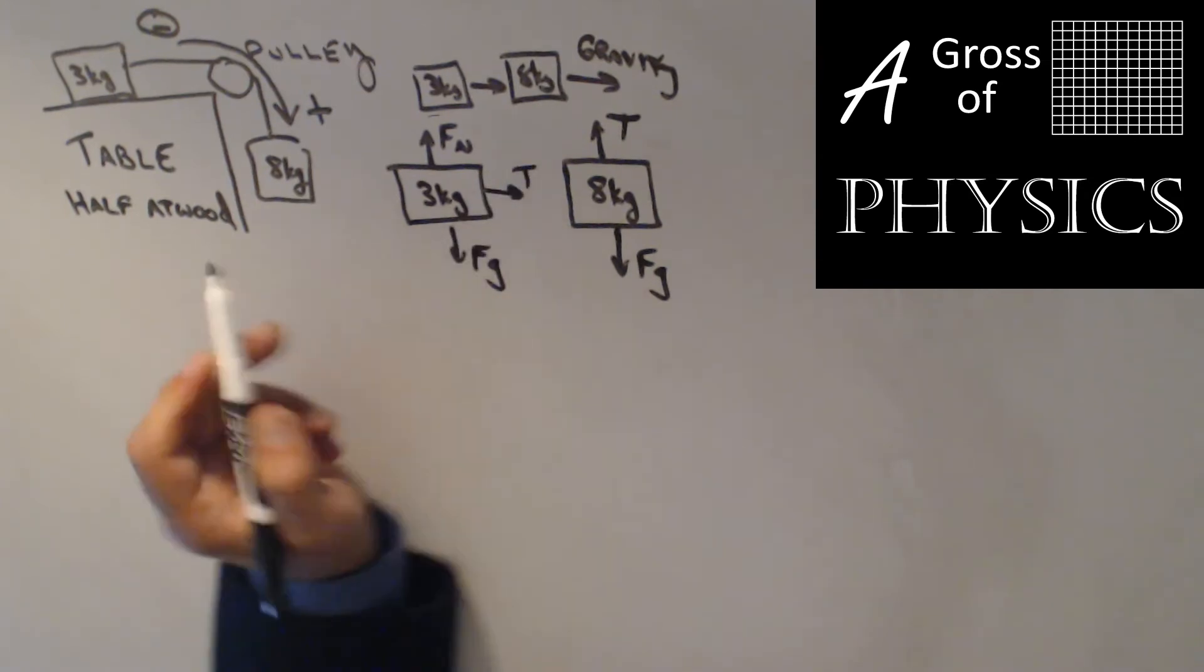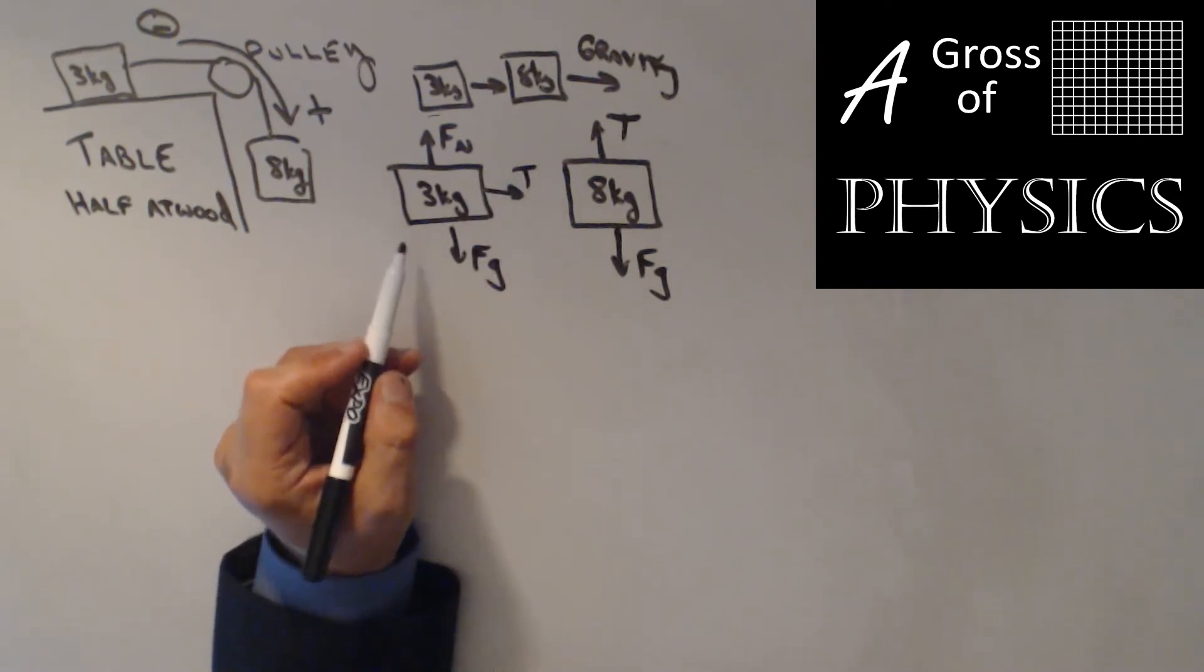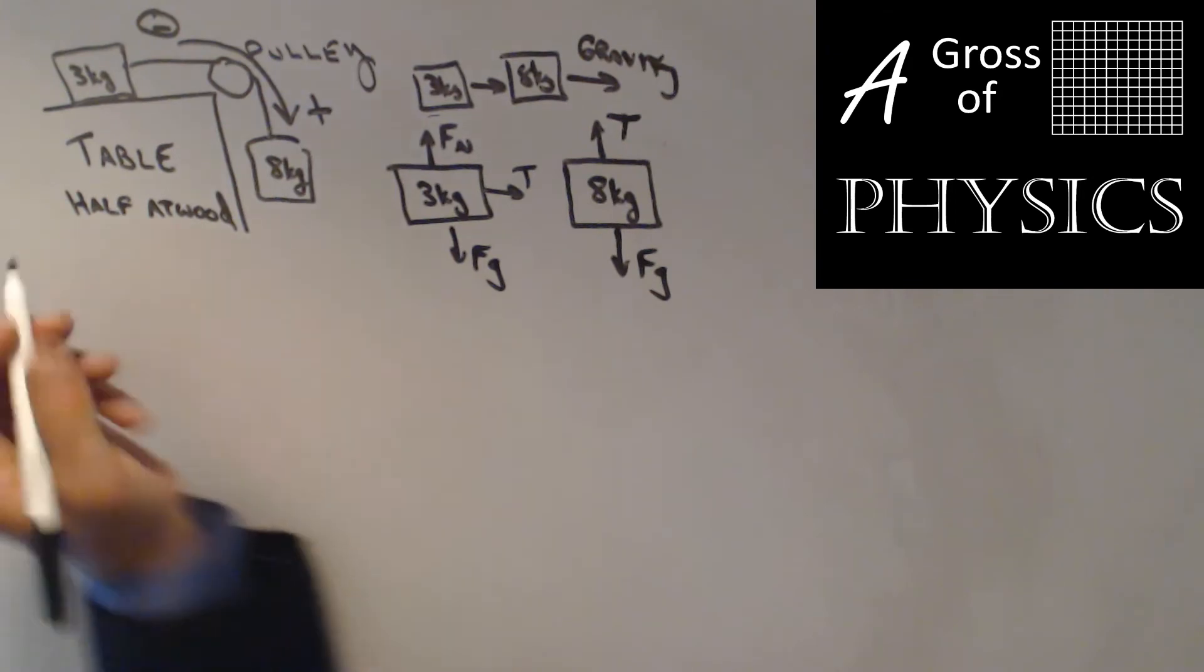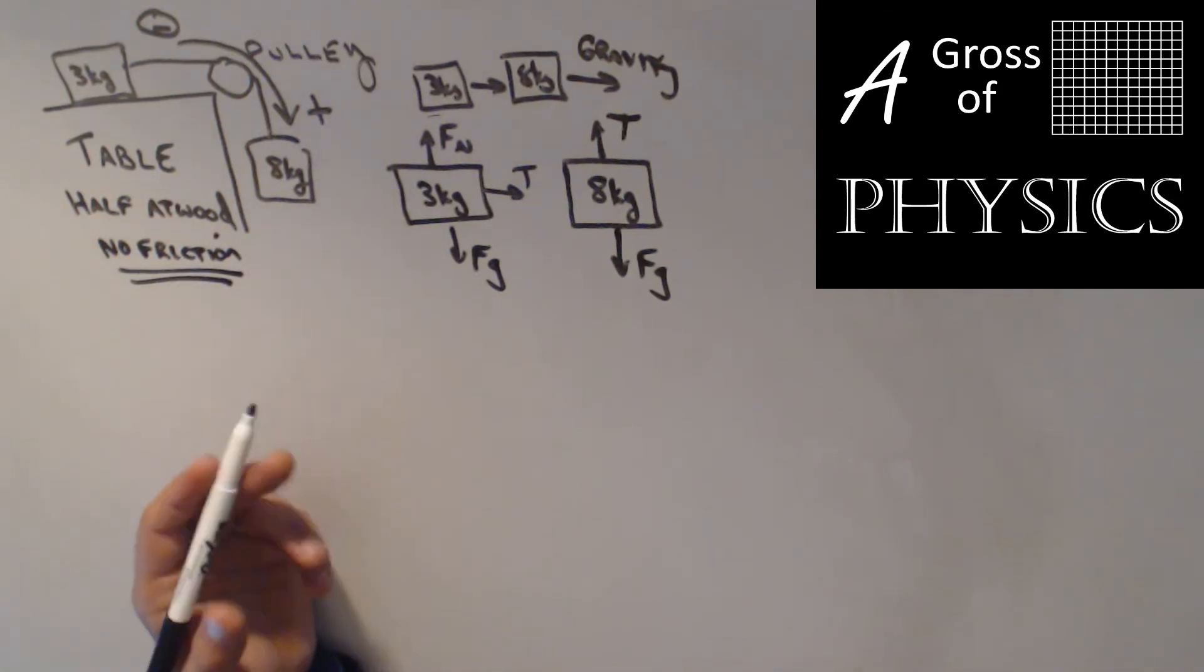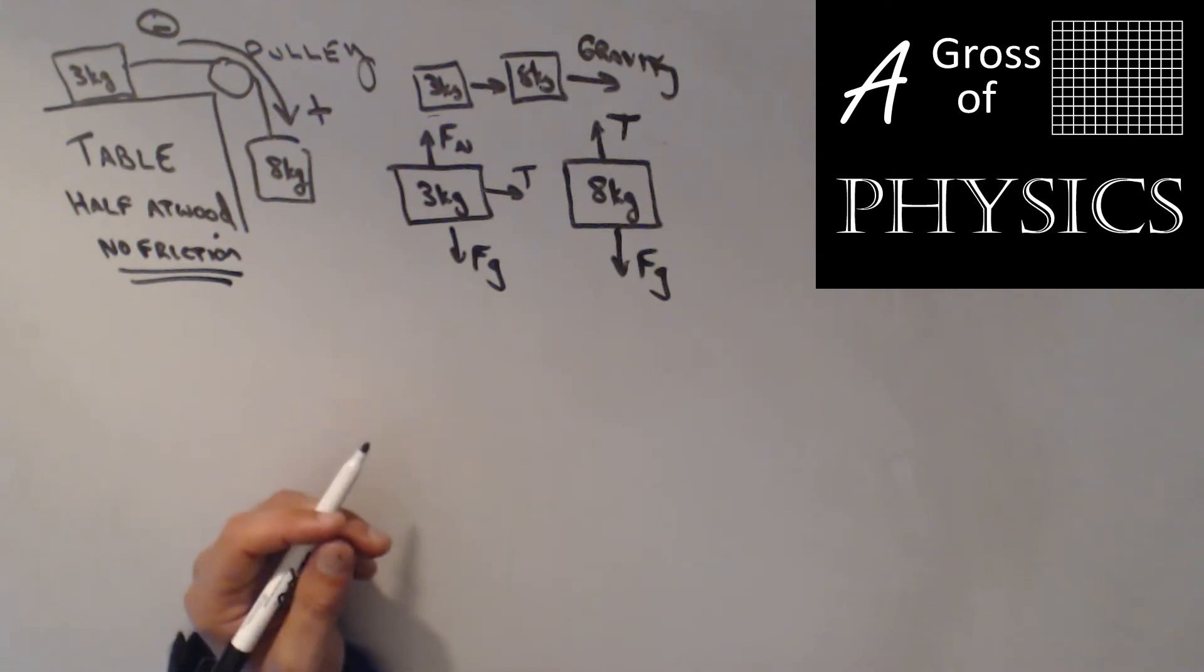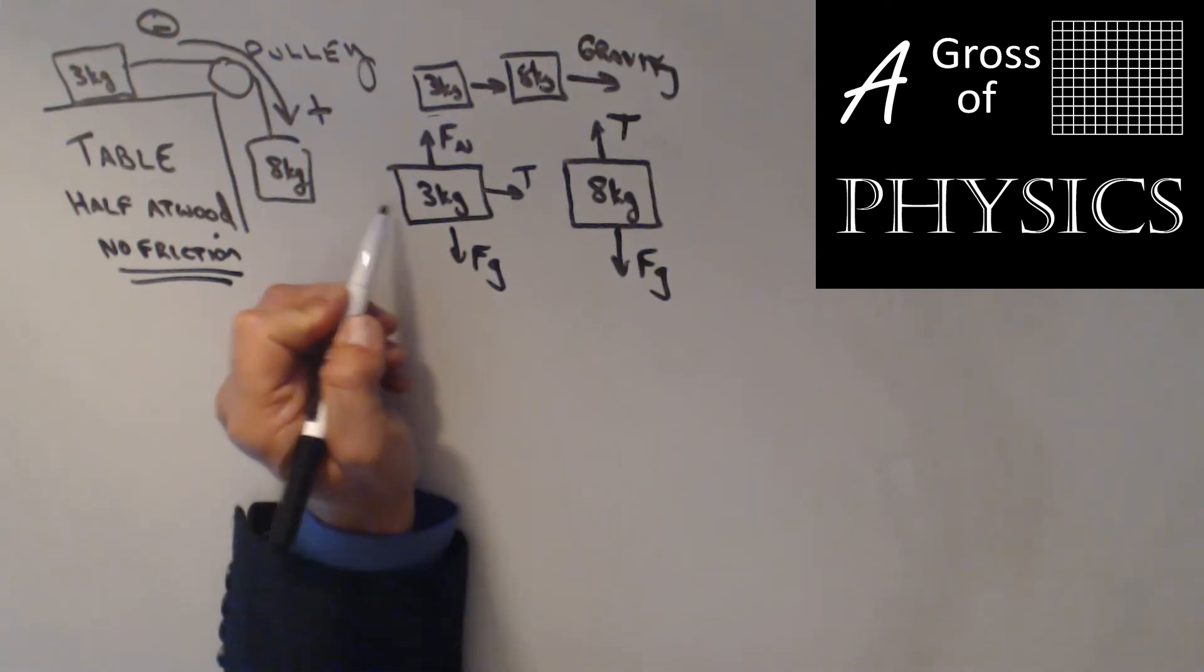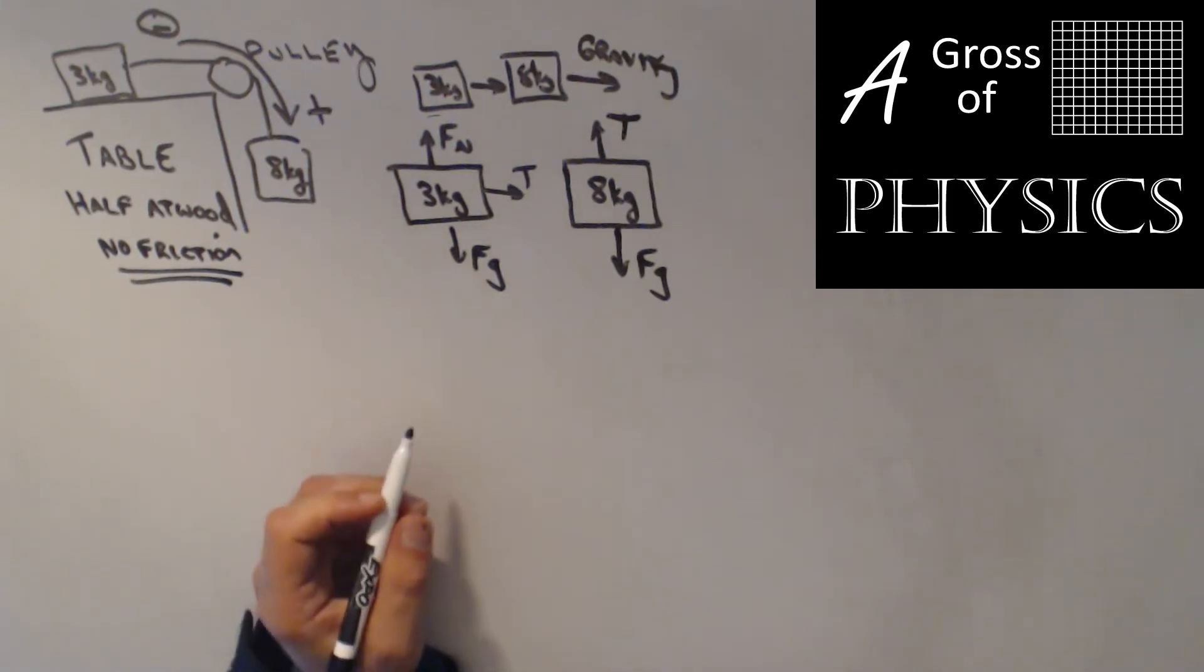Since we're dealing with a simplified version right now, we'll say there's no friction for this problem. We'll do an ideal situation with no friction. In a moment after this practice problem, we'll do another when friction is involved, which would be to the left on the 3 kg mass. We'll use different masses later.